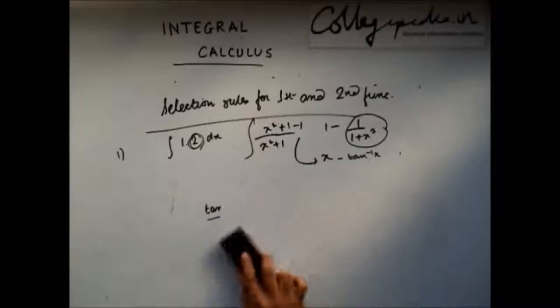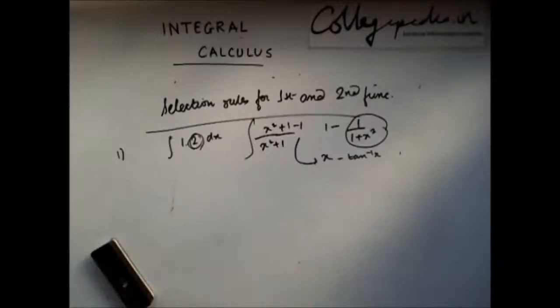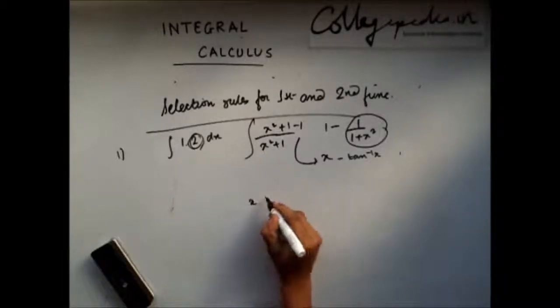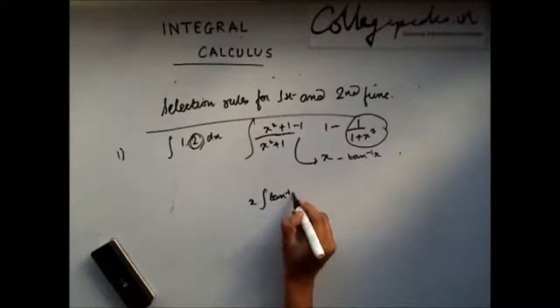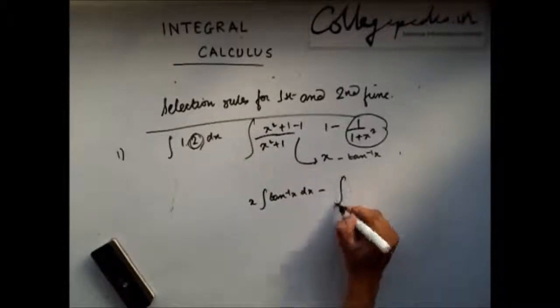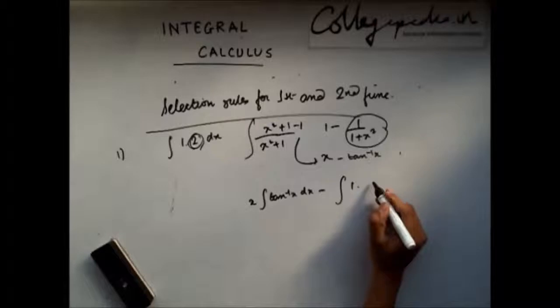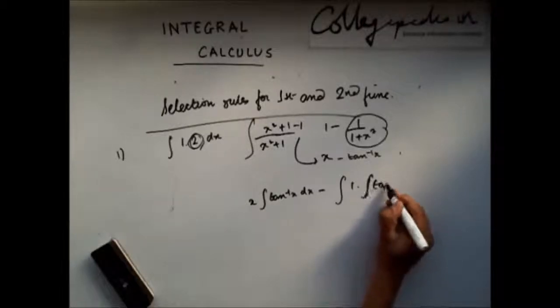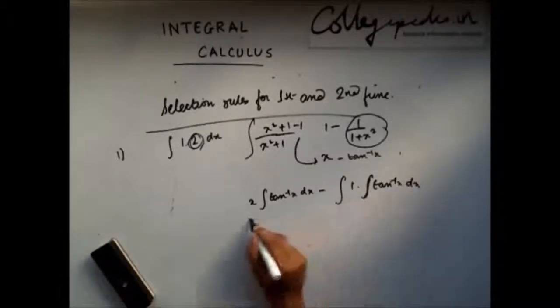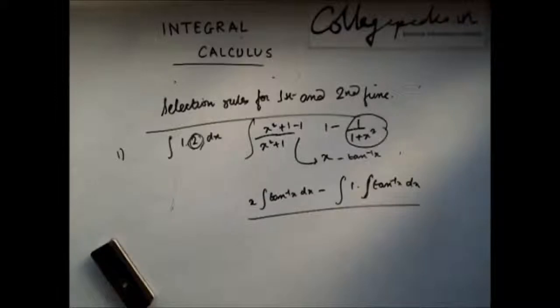If I had taken tan⁻¹(x) as my second function, then I would have landed up as x·∫tan⁻¹(x)dx minus 1, which is derivative of x, into integration of tan⁻¹(x). From here, I have no clue how to proceed with this question. So it is very important which function you select as a first function and which function you select as the second function.